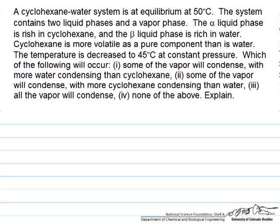This question revolves around a vapor-liquid-liquid equilibrium question. Here we have a cyclohexane-water system that is at equilibrium at 50 degrees C, and it contains two liquid phases—one that is rich in cyclohexane and the other that is rich in water—and that is in equilibrium with a vapor phase.